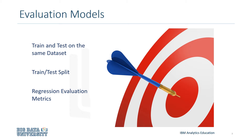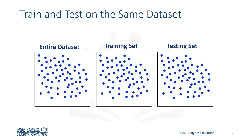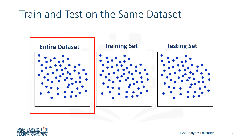We'll talk about what each of these are, as well as the pros and cons of using each of these models. The first evaluation model we'll talk about is the simplest one: train and test on the same dataset. You train the model on the dataset, then you test it using the same dataset. When you test with a dataset in which you know the classification for each data point, you're able to obtain a percentage of accurate predictions. This evaluation model would most likely have a high training accuracy and a low out-of-sample accuracy, since the model knows all the testing data points from the training.